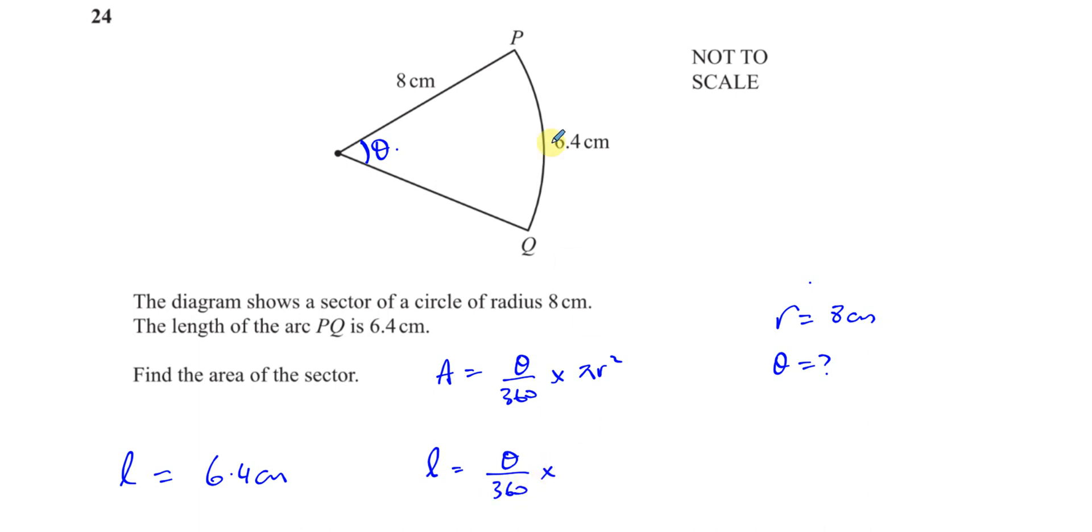That's the fraction of the whole circumference of the circle would be 2 pi r. So that's the fraction of the whole circumference that this length of this arc is, is 6.4 cm.